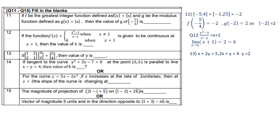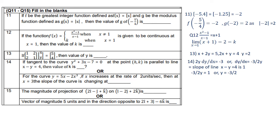Question 14: if the tangent to the curve y² + 3x − 7 = 0 at point (h, k) is parallel to the line x − y = 4, find k. Differentiating implicitly: 2y(dy/dx) = −3, so dy/dx = −3/(2y). The slope of x − y = 4 is 1. Setting −3/(2y) = 1 gives y = −3/2. Since y = k at the point, k = −3/2.